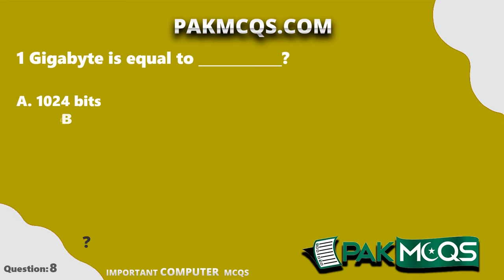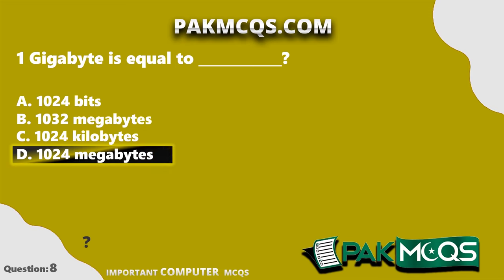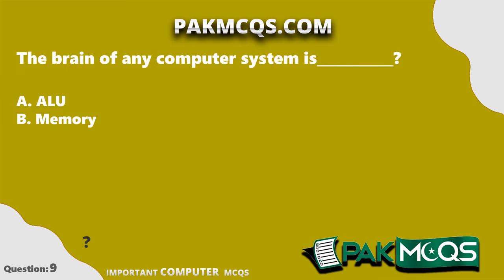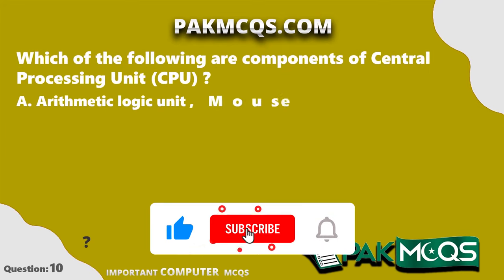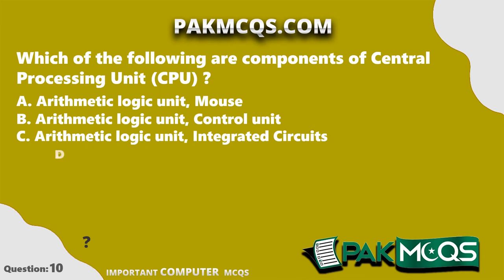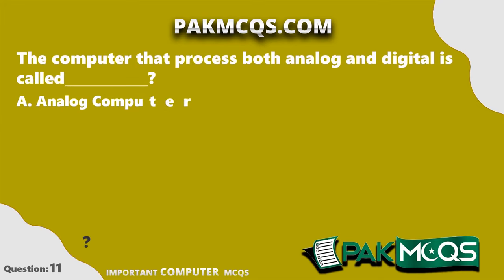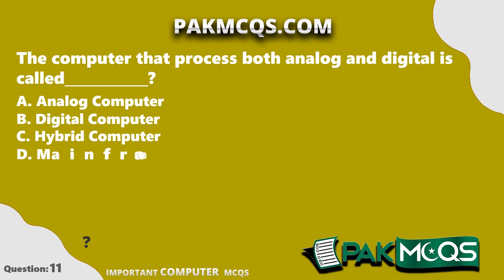One gigabyte is equal to 1024 megabytes. The brain of any computer system is the CPU. The components of the Central Processing Unit (CPU) include the Arithmetic Logic Unit and the Control Unit. The computer that processes both analog and digital signals is called a hybrid computer.